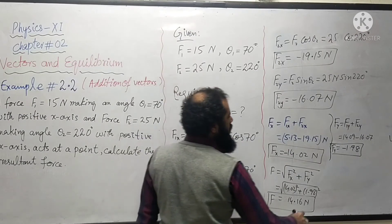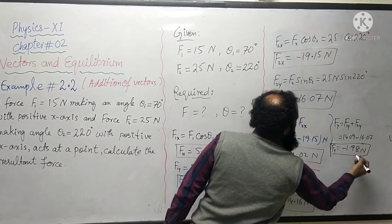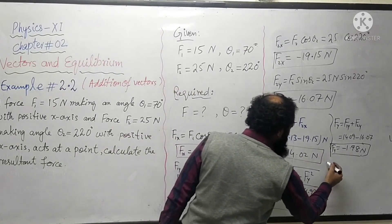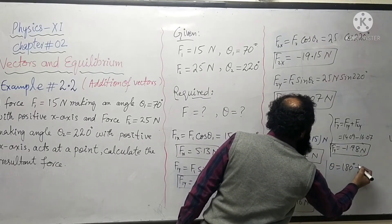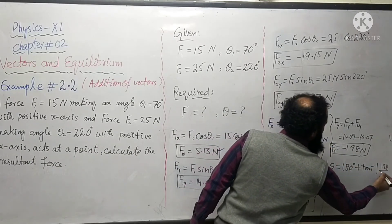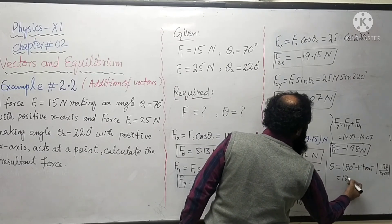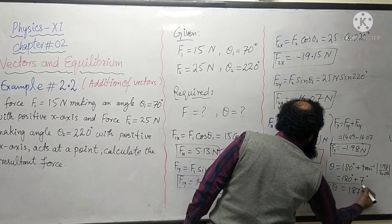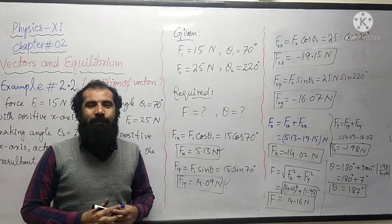To find the angle, both the x and y components are negative, so the resultant is in the third quadrant. We use the third-quadrant formula: theta equals 180 degrees plus tangent inverse of (Fy/Fx), which is 180 degrees plus tangent inverse of (1.98 divided by 14.02). This gives approximately 180 plus 6.9, so about 187 degrees. This is the resultant of the two given vectors.